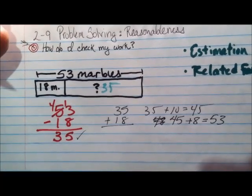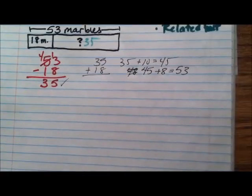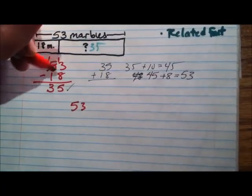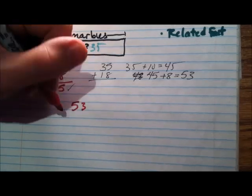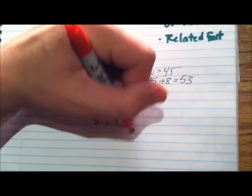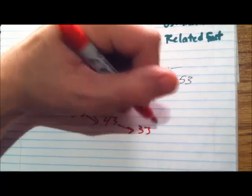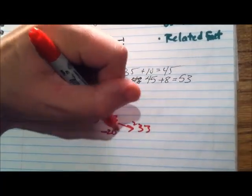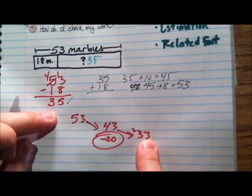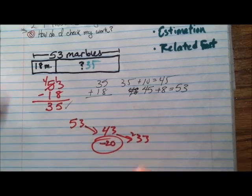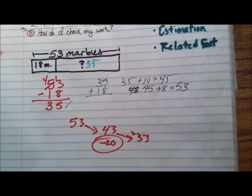Now let's go back and check it with estimation. We're going to round our number. We'll start with 53 again, but this time instead of taking away 18, we're going to take away 20 because we can count down by 10s pretty quickly. Down by 10 gets you to 43, down by another 10 gets you to 33. So my estimation gives me 33. Well, 33 is pretty close to 35, so this is probably right. I'm off by 2 — that makes sense, so this is going to work just fine.